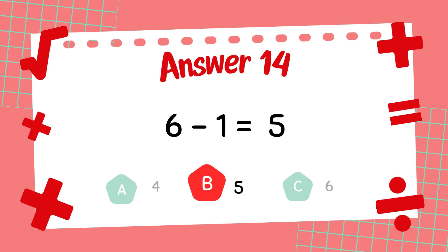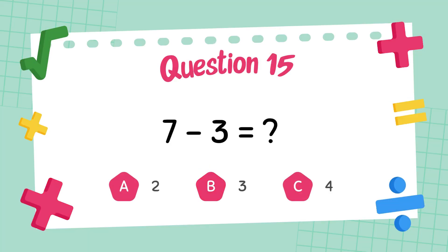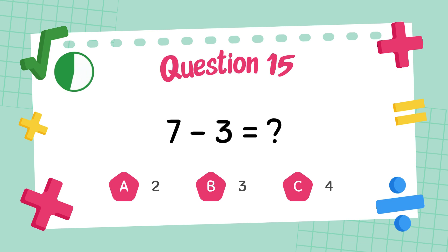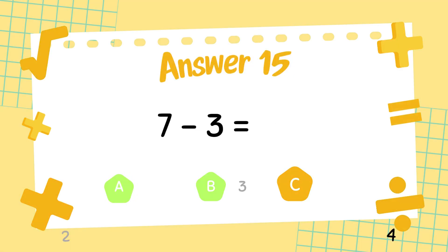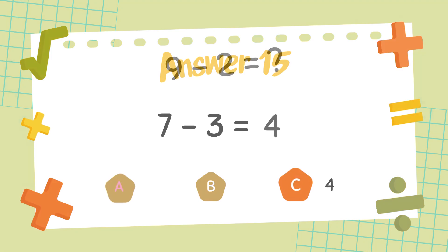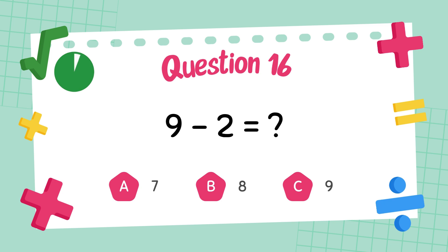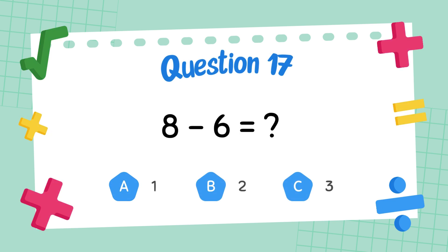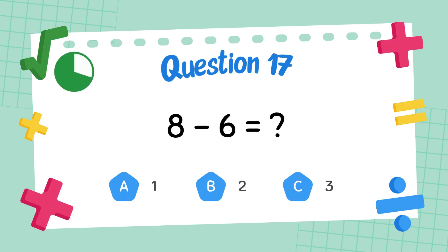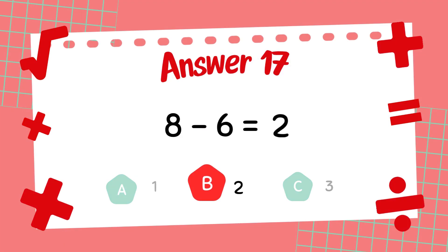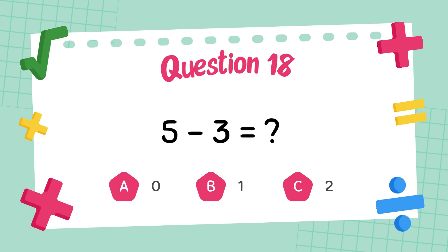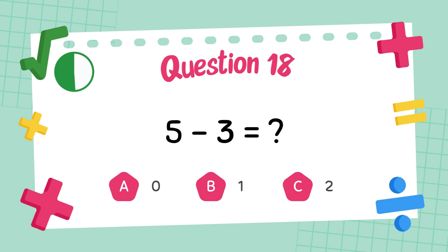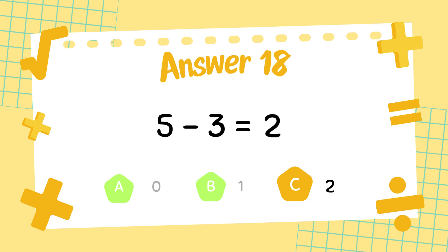What is 7 minus 3? The answer is 4. What is 9 minus 2? The answer is 7. What is 8 minus 6? The answer is 2.